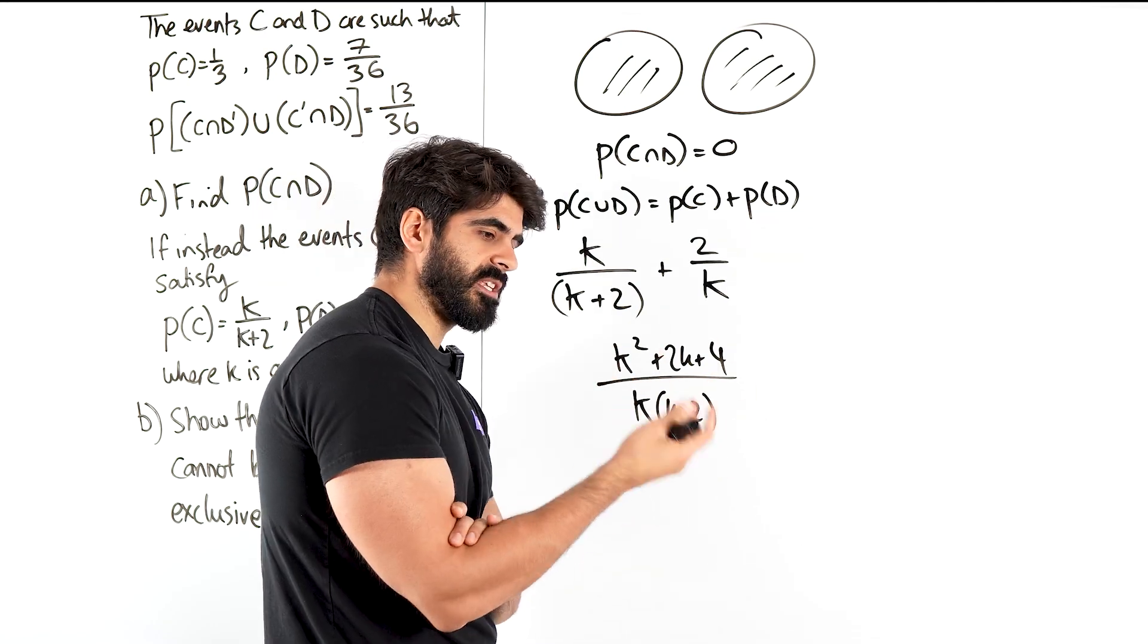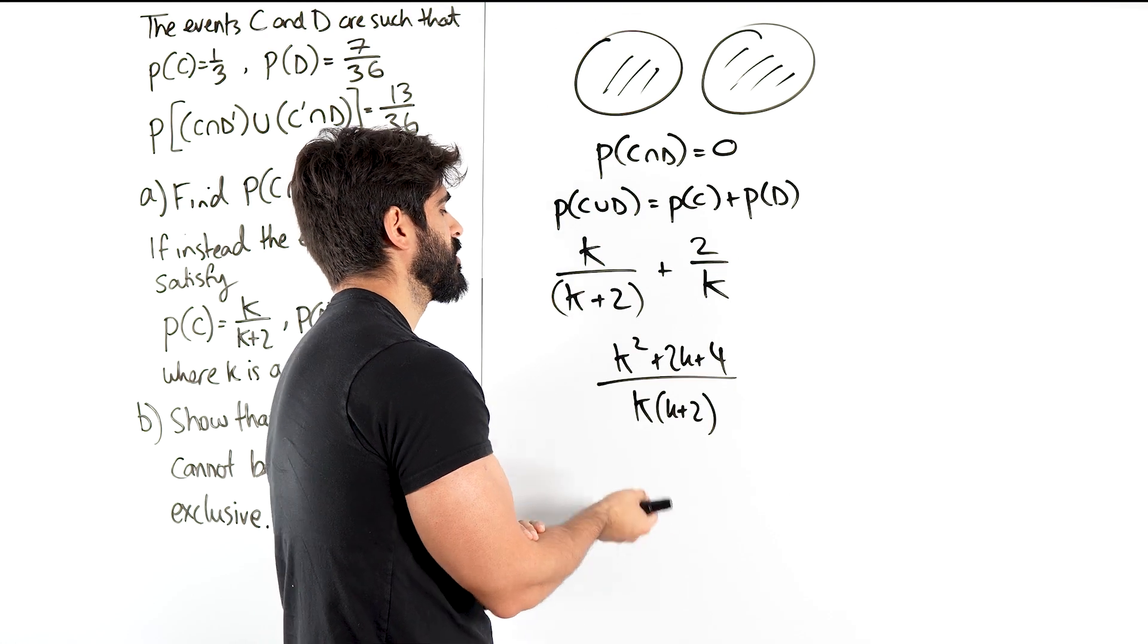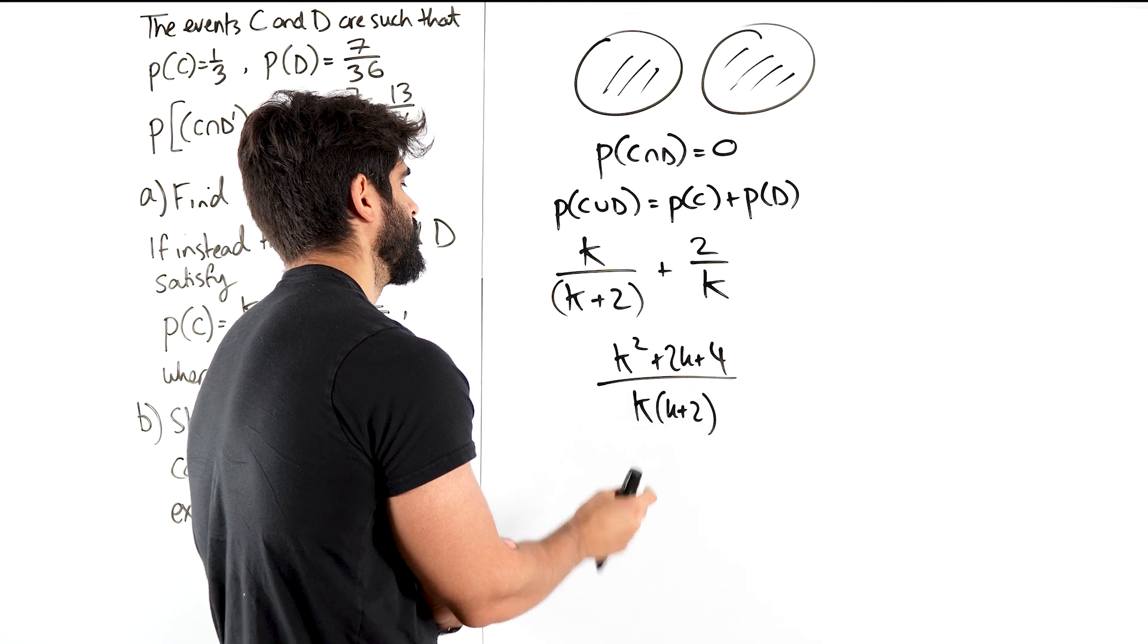But we have to think then, what does it mean for this to not be true? Well, most likely we can show this is not true if we can show it's bigger than 1. So if I can somehow show that it's bigger than 1, then I'm done.